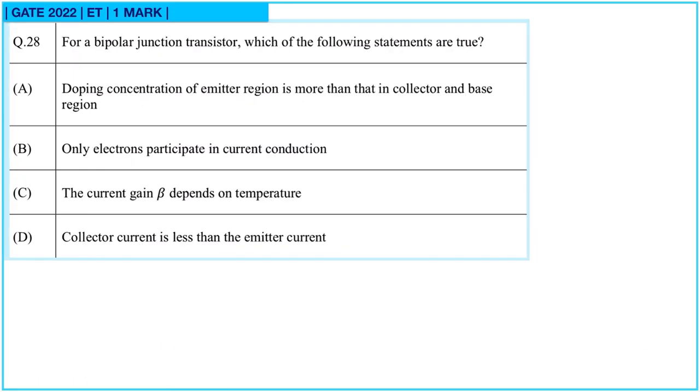Next question. For a bipolar junction transistor, which of the following statements are true? First, doping concentration of emitter junction is more than that in collector and base region. This is correct. Emitter has the highest concentration, then collector and then base. Option B, only electrons participate in current conduction. Here both electrons and holes participate. Option C, the current gain beta depends on temperature. Yes, beta is temperature dependent. And option D, collector current is less than emitter current. Emitter current is equal to collector current plus base current. That means yes, Ic will be less than Ie. So here A is correct, C is correct, and D is also correct. So here correct options are A, C and D.